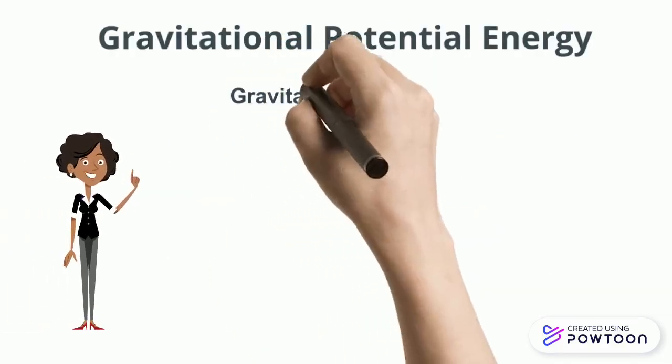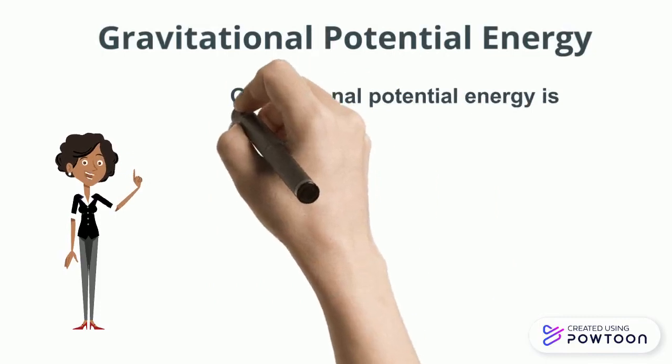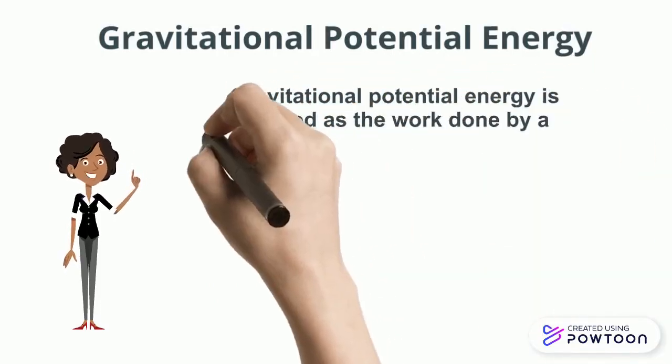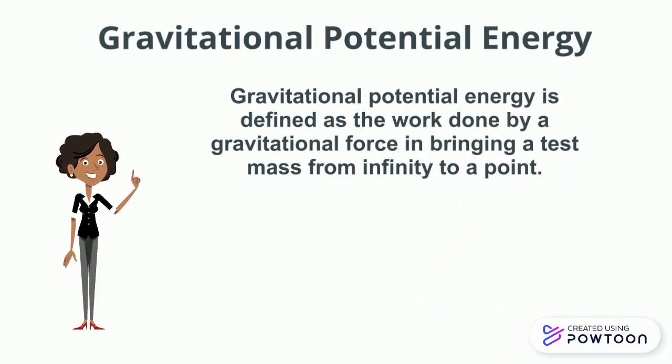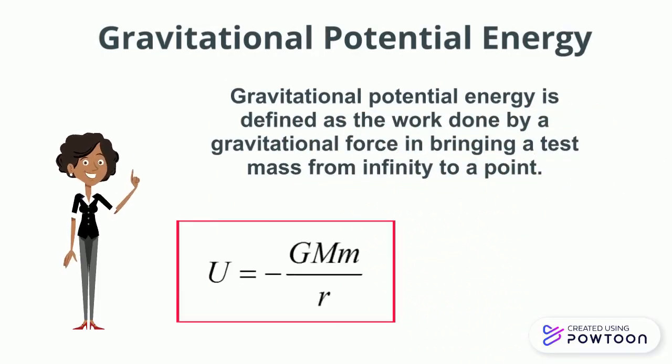Gravitational potential energy is defined as the work done by a gravitational force in bringing a test mass from infinity to a point. U equal to minus Gmm over R.